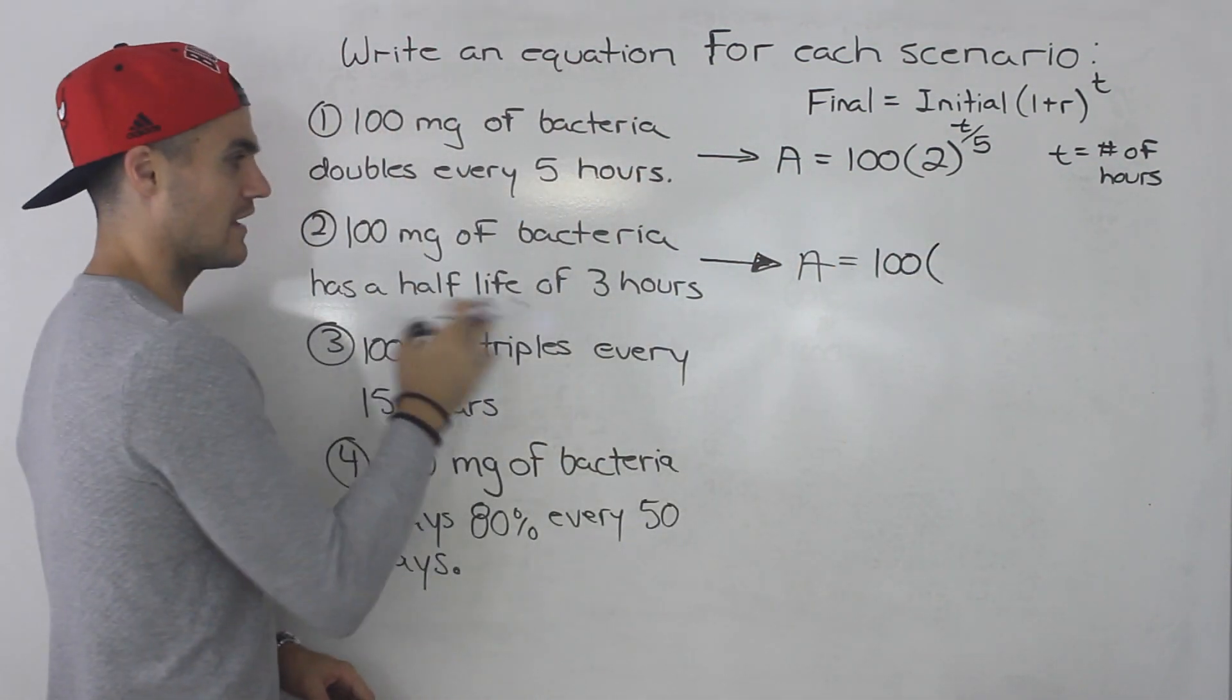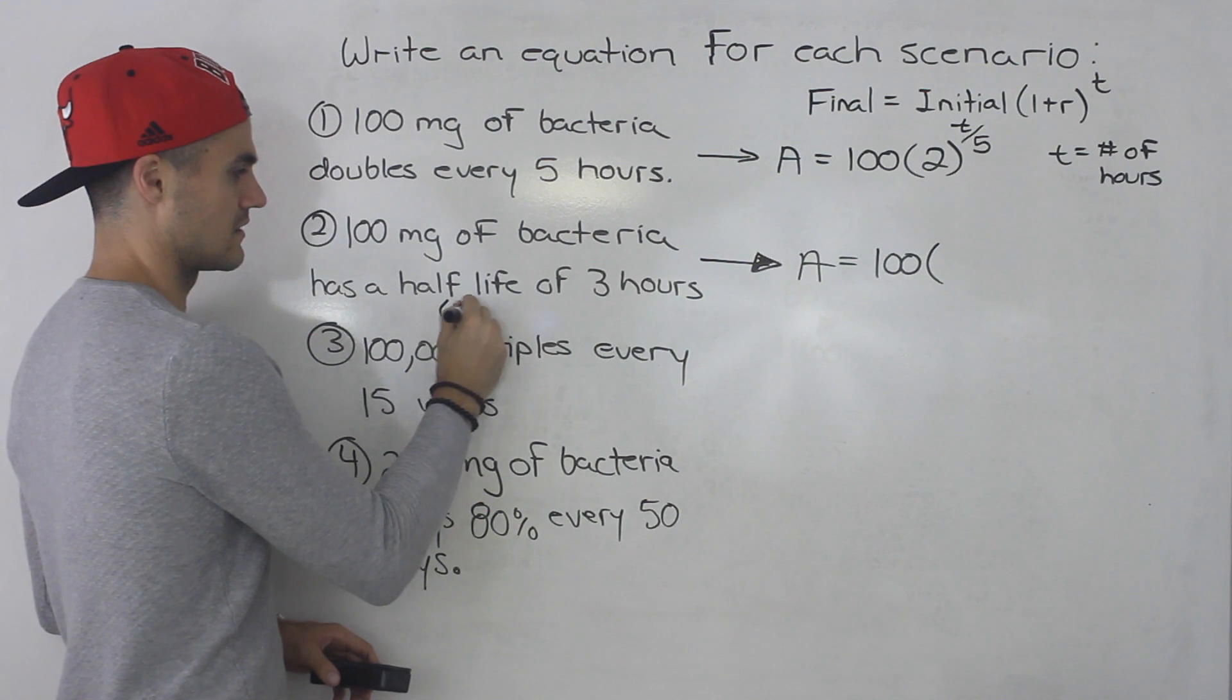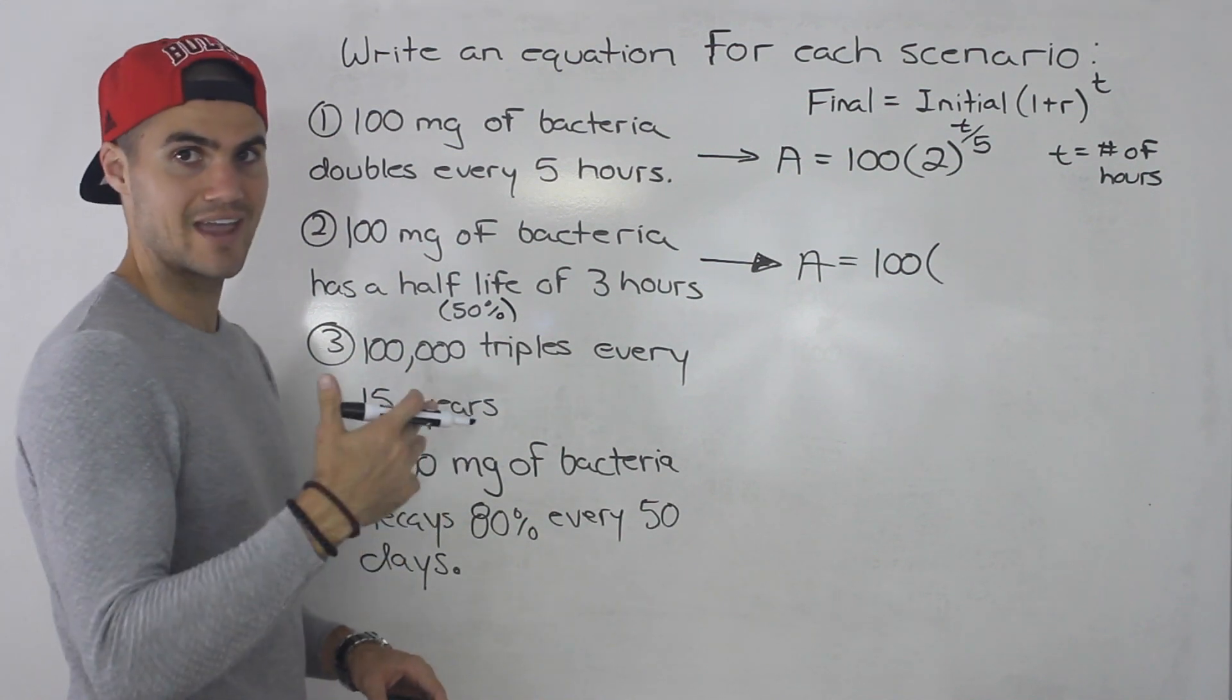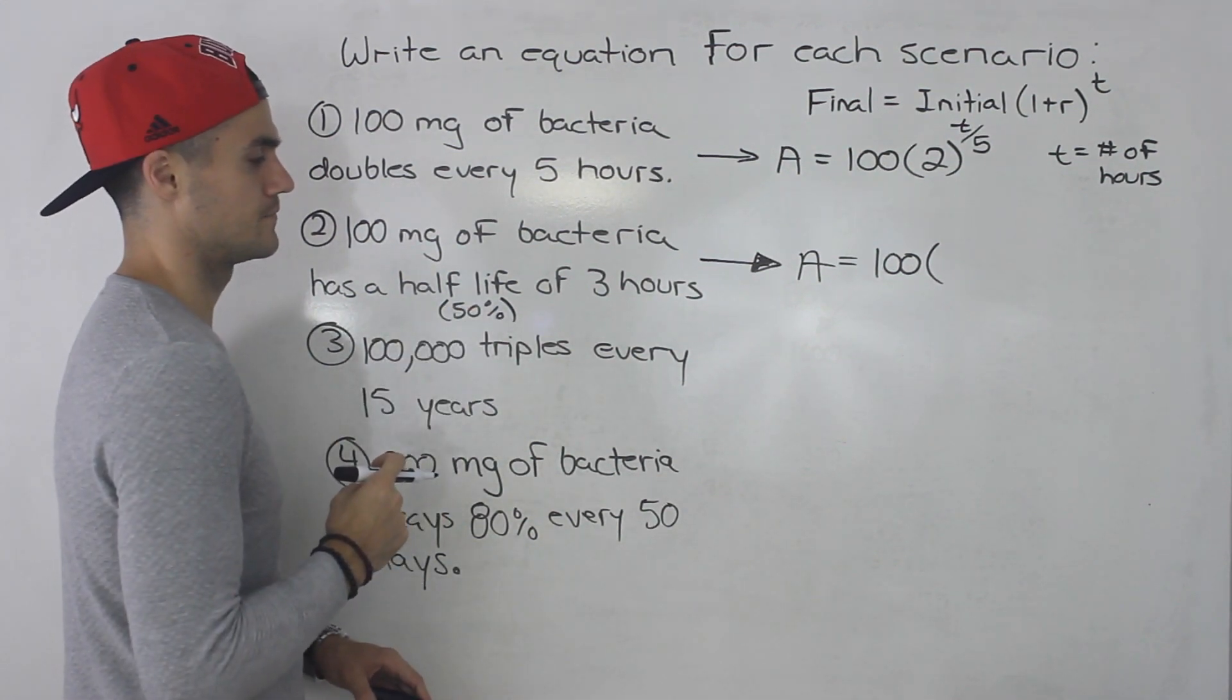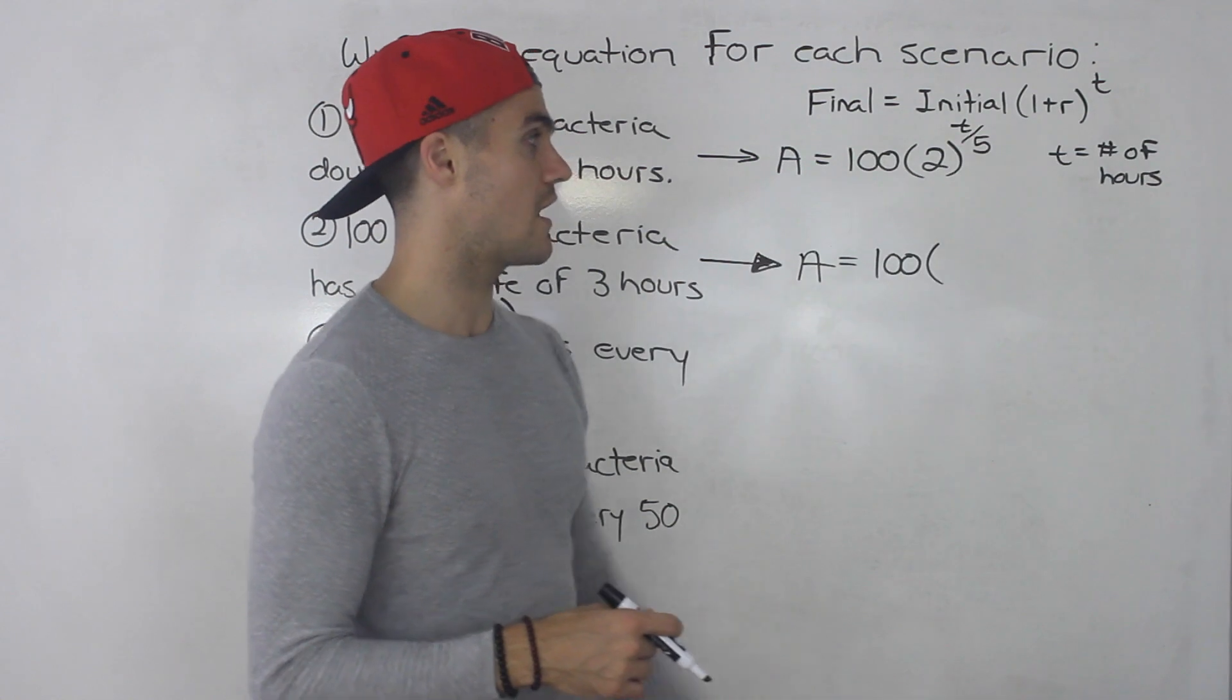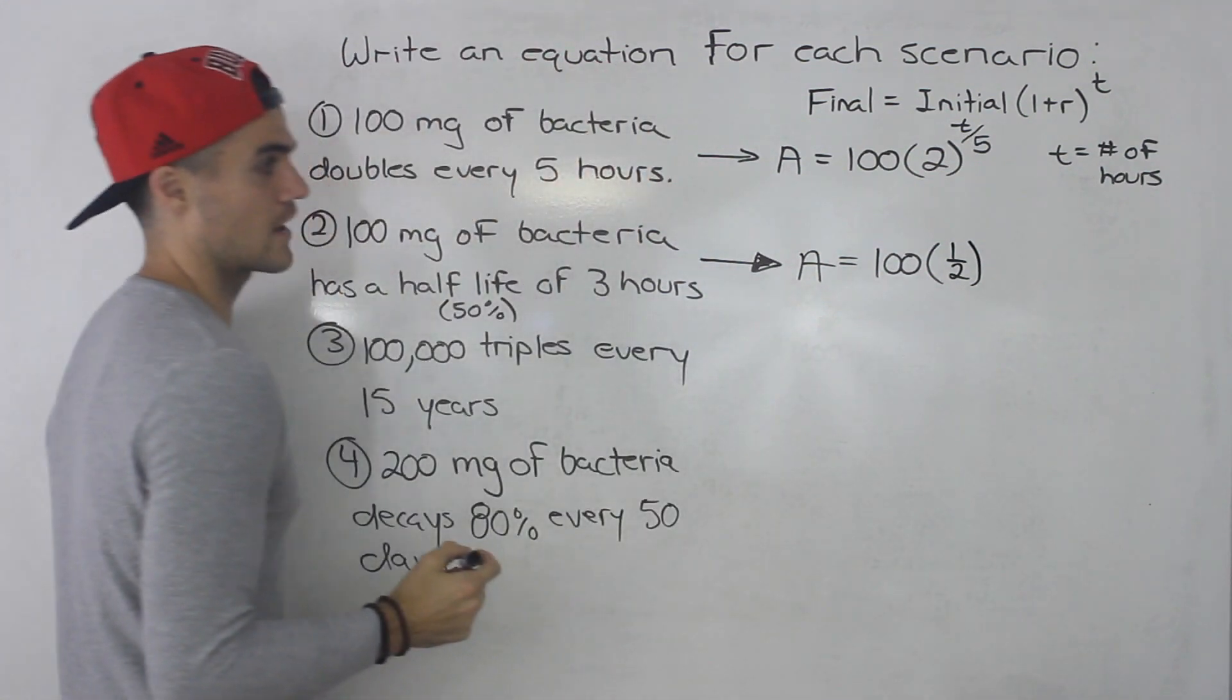Now, if it has a half-life of three hours, it means it's decaying. It means it's decaying by 50% every three hours. So a decay rate is negative and then 50% is negative 0.5 in decimals. So one minus 0.5 gives us 0.5. So this is going to be a half here, 0.5, where we could just put a half as a fraction.